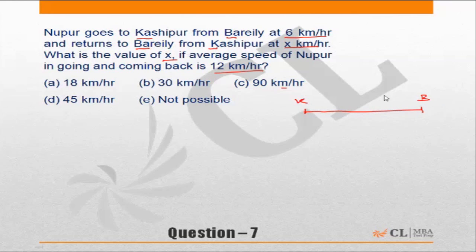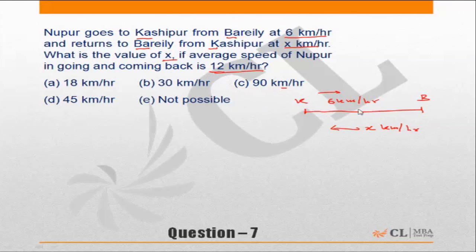Noopul goes from Kaashipul to Baleli at a speed of 6 kilometers per hour. On the return journey, she has a certain speed — let us assume that to be x kilometers per hour. The question says if the average speed for the entire journey is 12 kilometers per hour, what is the value of x?